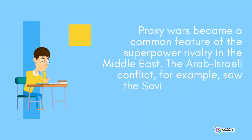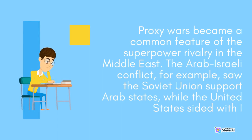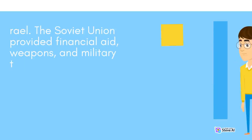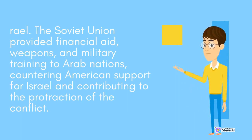Proxy wars became a common feature of the superpower rivalry in the Middle East. The Arab-Israeli conflict saw the Soviet Union support Arab states while the United States sided with Israel. The Soviet Union provided financial aid, weapons, and military training to Arab nations, countering American support for Israel and contributing to the protraction of the conflict.